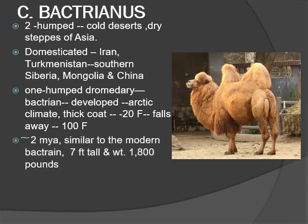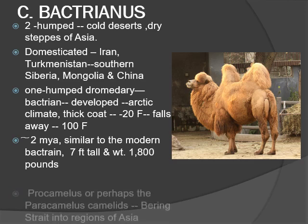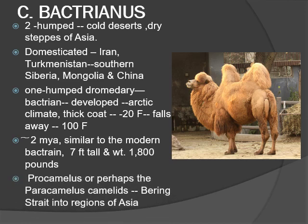Around two million years ago, the Bactrian, looking very similar to the modern Bactrian, standing about seven feet tall and weighing an average of 1,800 pounds, had evolved from Procamelus or perhaps Paragammulus that had traveled across the Bering Strait into the Arctic regions of Asia.